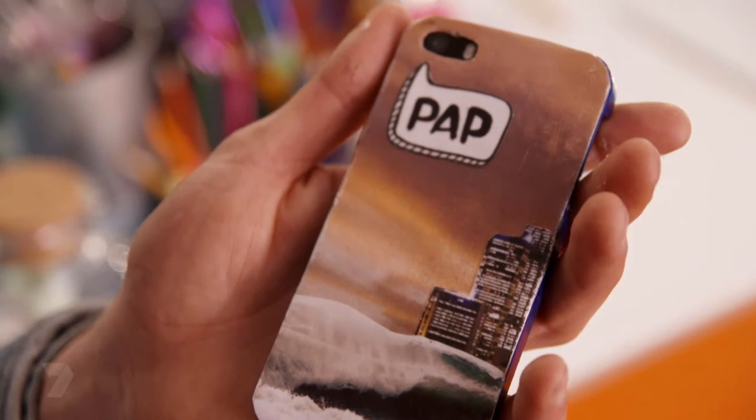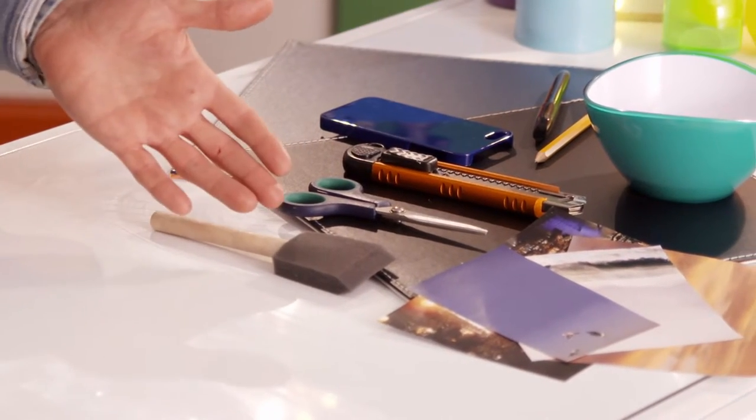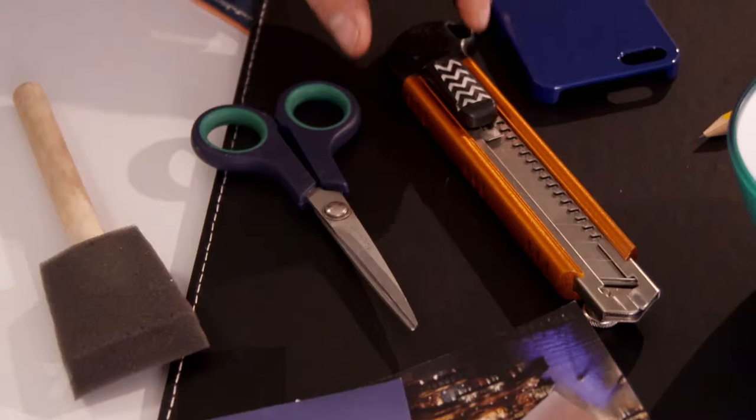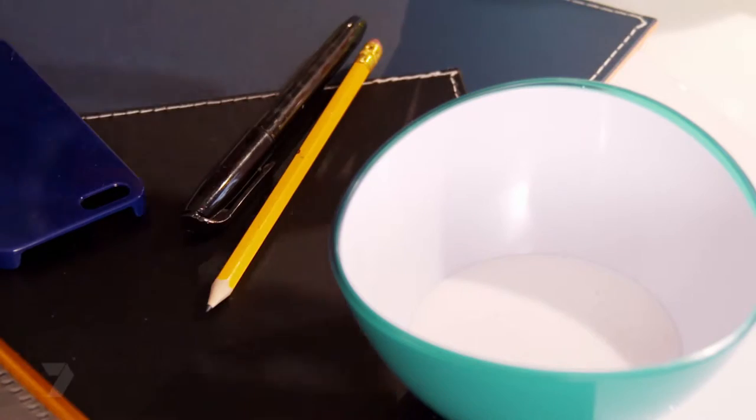I've used a few photographs I've taken. What you're going to need are your images printed out on paper, a sponge brush, scissors, a Stanley knife, phone case, a marker and pencil, and some craft glue. Your Stanley knife and scissors are very sharp, so make sure there's an adult to help you out.